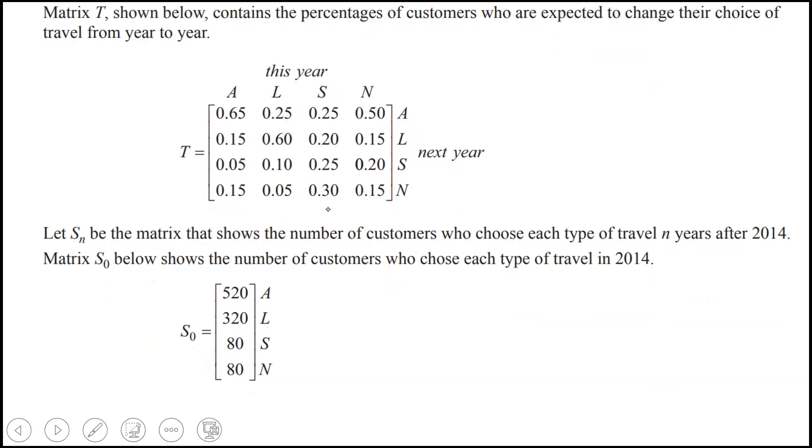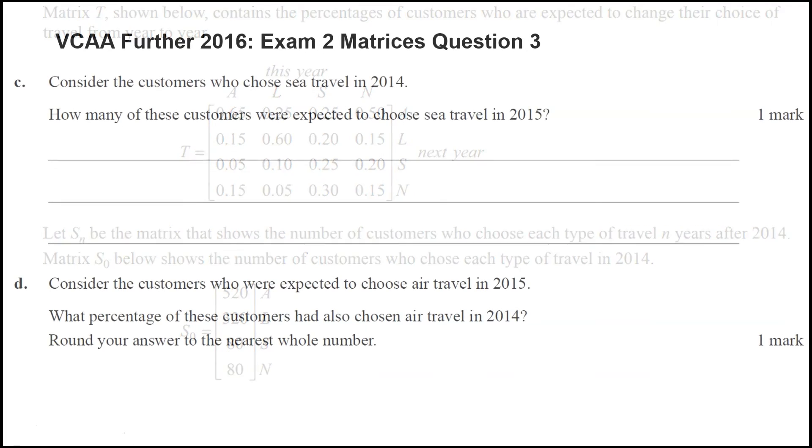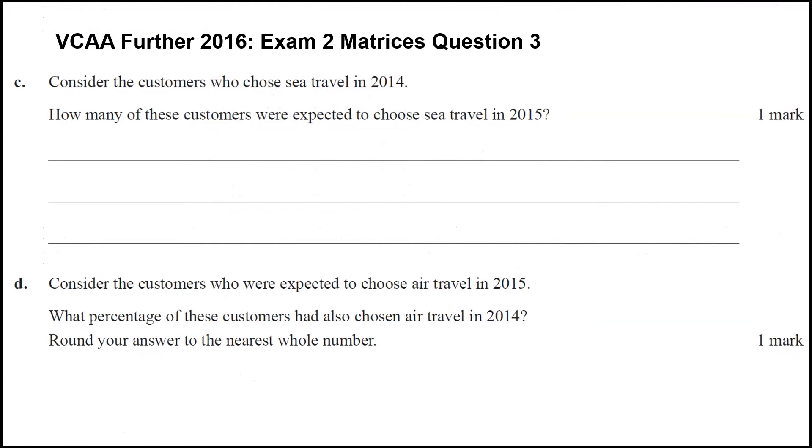And we won't go through the first few questions, but the tricky questions were the last ones. Part C, which is asking about the customers who chose sea travel in 2014. How many of them would be expected to choose sea travel again in 2015? And part D is a similar thing, but the opposite way.